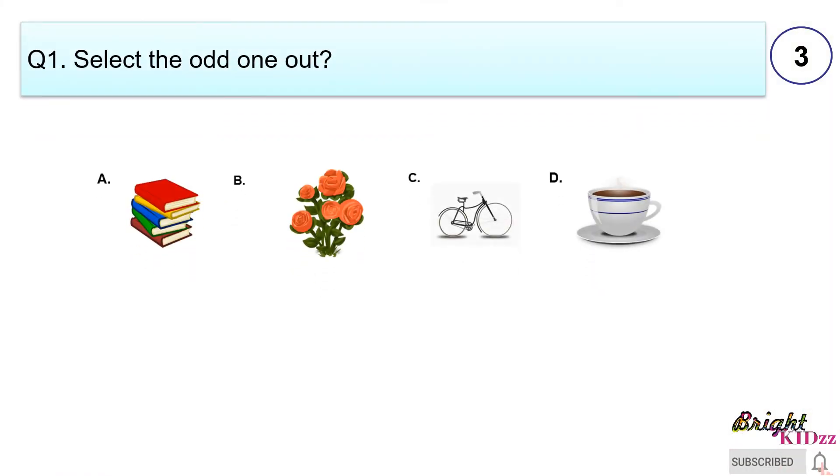Select the odd one out. A. Books B. Plants C. Bicycle D. Cup. Answer B. Plants. Because plants are living things, rest all are non-living things.